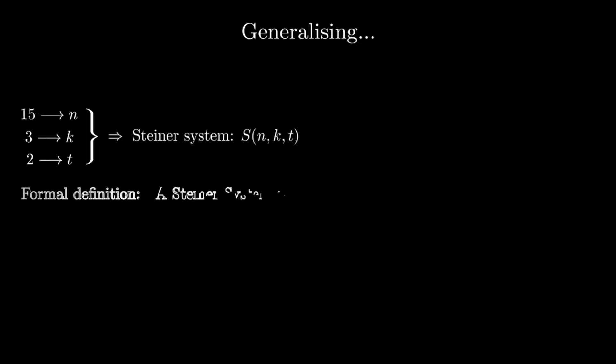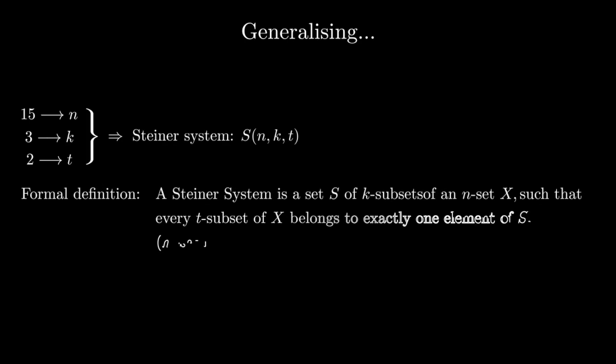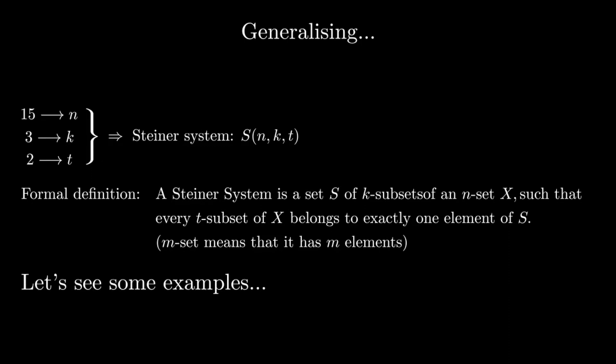More formally, a Steiner system is a set S of k subsets of an n set, x, such that every t subset of x belongs to exactly one element of S. I realize that the definition may look overwhelming, but I believe that with some examples everything will be clearer.